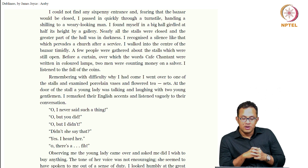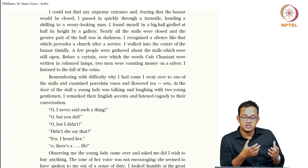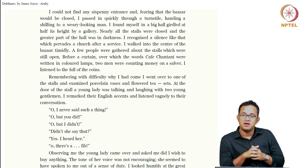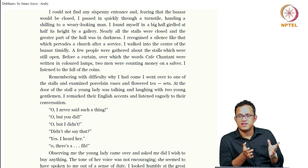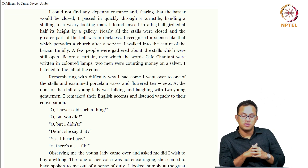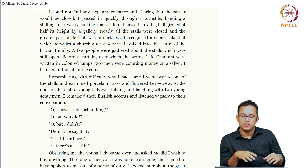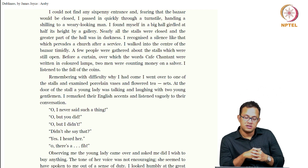At the door of the stall a young lady was talking and laughing with two young gentlemen — presumably flirting with each other. I remarked their English accents and listened vaguely to their conversation. The English accent here is very important because the boy is Irish and this is taking place in Dublin. The English accent becomes an accent of difference, informing an identity which is different from the boy's Irish identity. The difference in identity is delineated with the use of accent — it becomes a marker of a different kind of identity which is hostile and further alienates him from Araby.